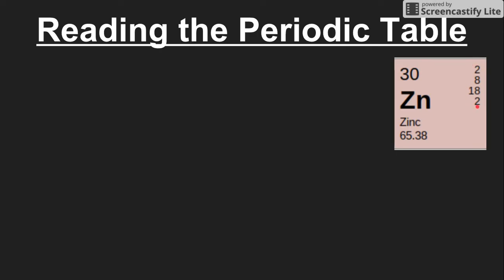Things that you will definitely see on every single periodic table are the number above the symbol, the symbol for the element itself, and then the number with the decimal point below the symbol. We get a little bit of extra information from the particular periodic table format that we're using in class, which is one of the reasons why I prefer that one.